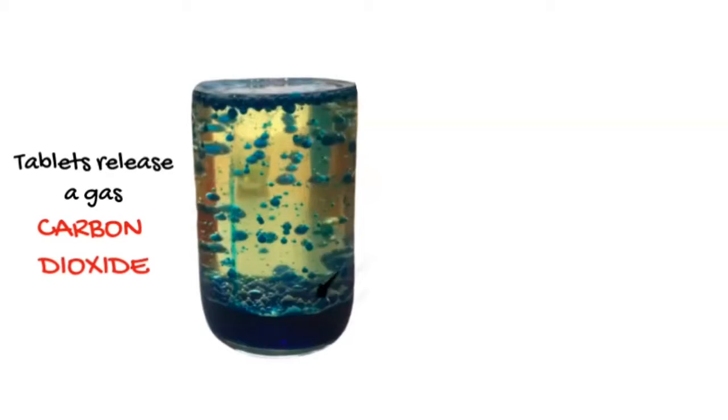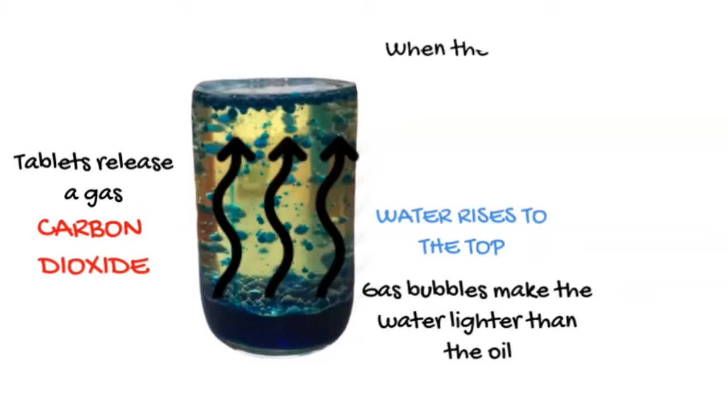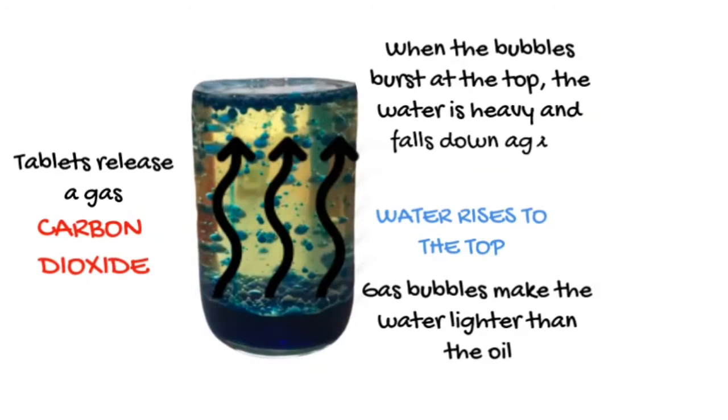The gas bubbles make the water lighter than the oil, and so the water parts that are colored rise to the top. When the bubbles of gas burst at the top, the water's heavy again and it falls down, kind of like rain.